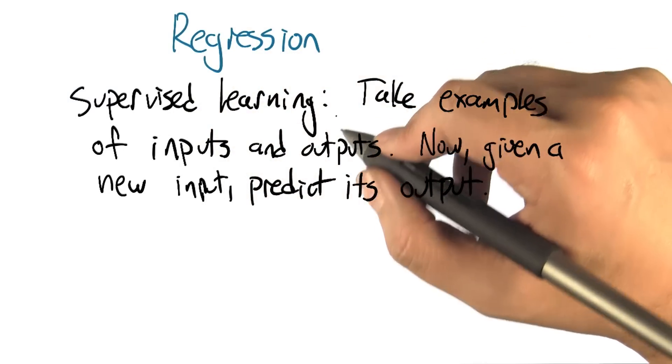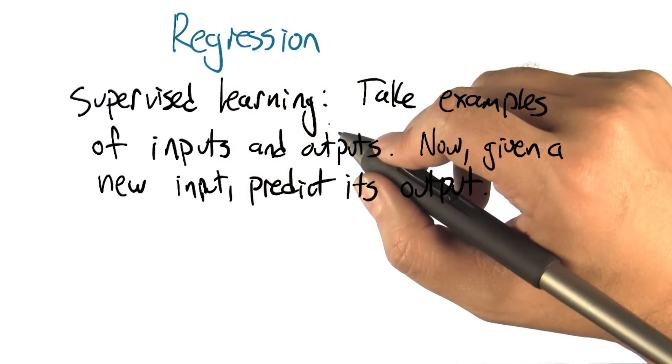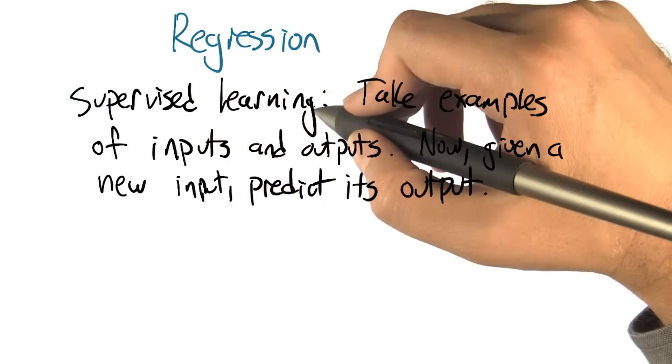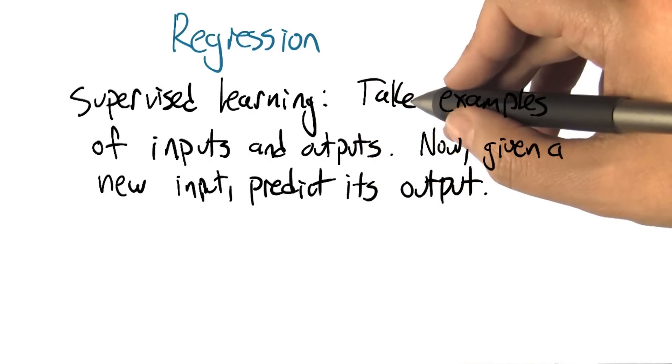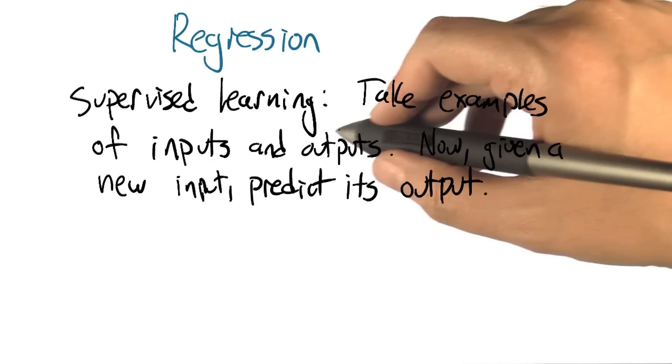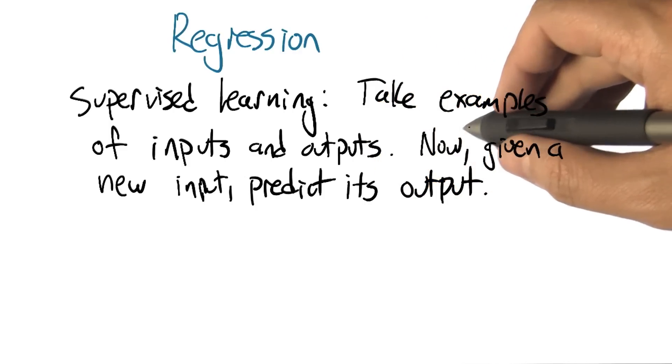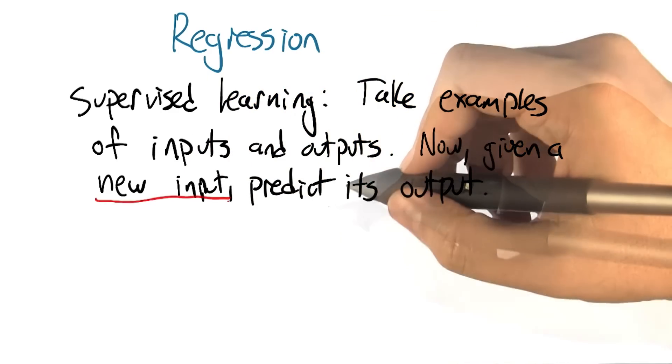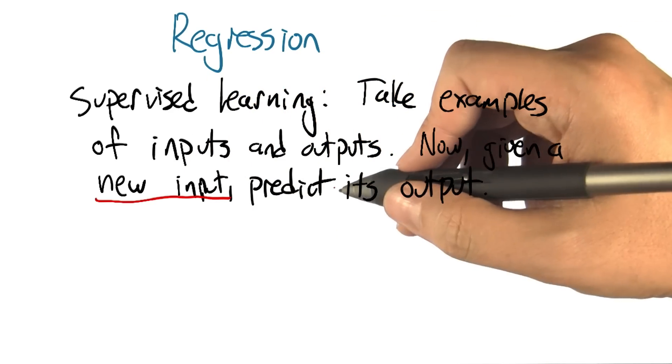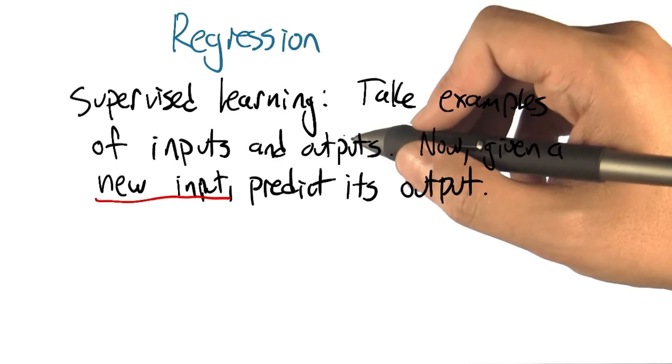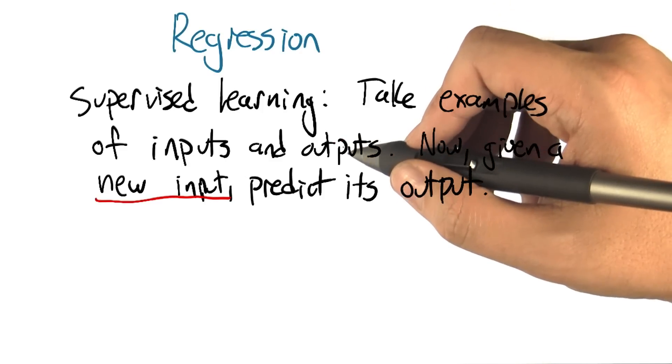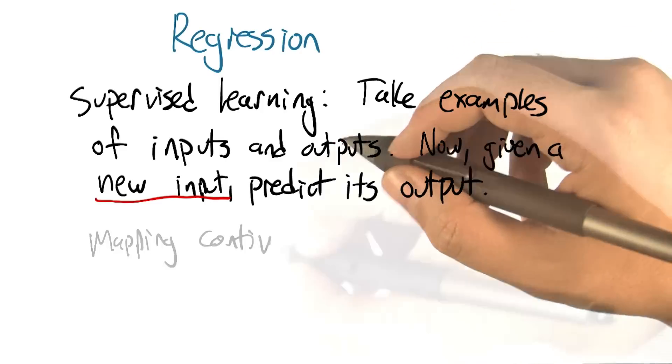So let me tell you about regression. In this section of the class, we're talking about supervised learning. In supervised learning we're going to take examples of inputs and outputs. And based on that, we're going to be able to take a new input and predict the corresponding output for that input. This covers all of the things that we're talking about in the context of supervised learning.